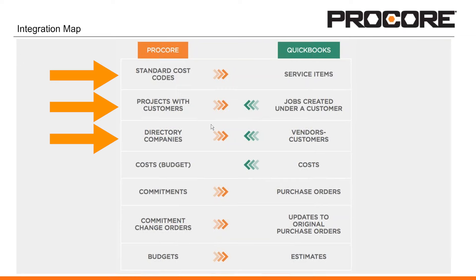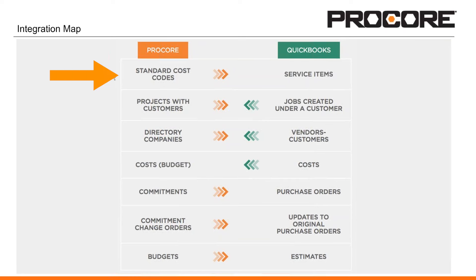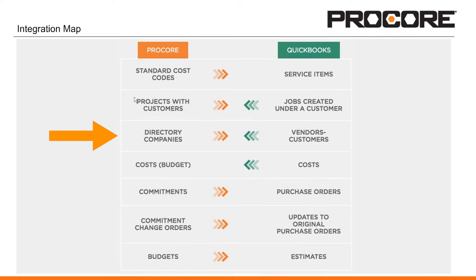Walking through the first three lines, this is where a large number of our clients are saving a ton of time in manual and duplicate entry. First, you can sync your standard cost codes from Procore into QuickBooks at the click of a button. Then you can take your projects with customers or directories with companies and sync those over to QuickBooks. As you have ongoing projects, you can create those in either system and sync via our ERP integration.